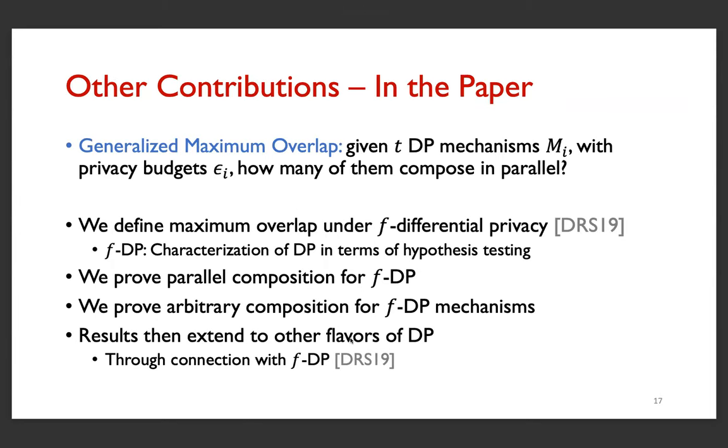There are other contributions in our paper. One of them is that instead of simply defining maximum overlap as a fixed mechanism and T different queries, we can define it as the composition of T different DP mechanisms and see if they compose in parallel. In order to define this, we define that under the notion of f-differential privacy, which is a recent notion of differential privacy characterized in terms of hypothesis testing. One of our contributions is to prove a parallel composition theorem for FDP, and also then use that to have an arbitrary optimal composition for FDP mechanisms. The reason to focus on FDP is that we can then relate all these results to other flavors of DP through the connection with FDP.